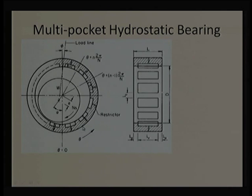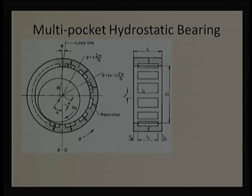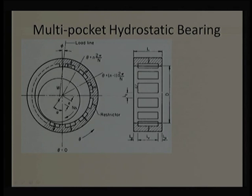The pockets must be blind slots — not through from one end to the other — so that liquid remains in the slot and supports the shaft rather than flowing straight through like a canal. With through-slots, the liquid would simply exit without providing any support. Blind pockets ensure the liquid acts as a localized reservoir for stable shaft support.